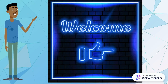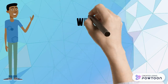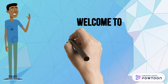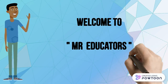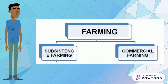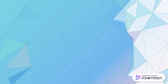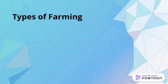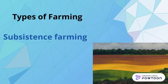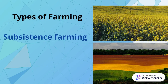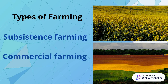Hello everyone. Welcome to MR Educators. Yesterday we have seen about types of farming. Today we will continue with it. Farming can be classified into two types: subsistence and commercial farming.